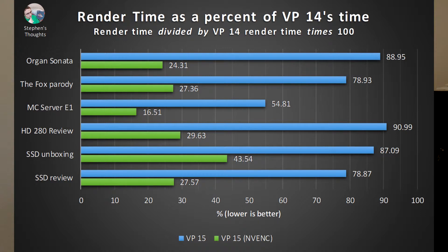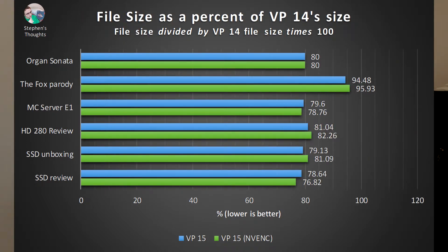Another aggregate metric is the percent of render time compared to version 14, where 100% equals the time version 14 took. Using this, we can see that version 15 renders in about 80% of the time, and with the Nvidia encoder only 20–30% of the time. The gaming video is again the outlier, enjoying a much larger performance improvement. File sizes were generally about 80% of what they were on version 14, with less variance than render times. I don't really know why the Star Wars parody had so little improvement in file size.